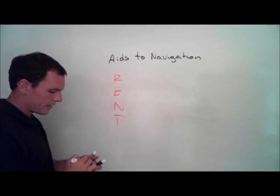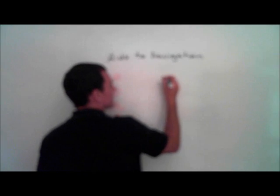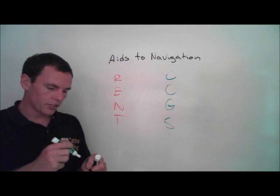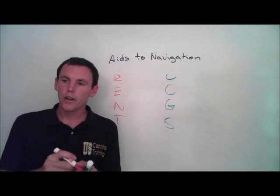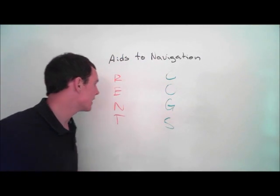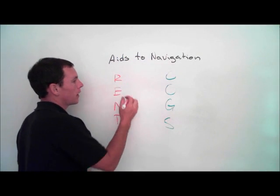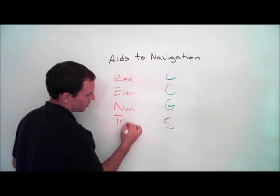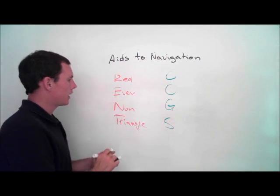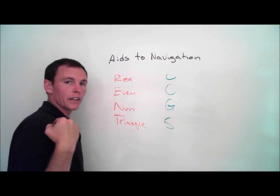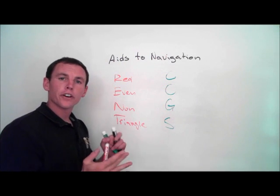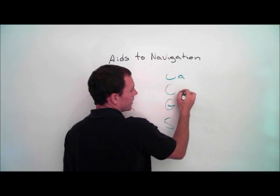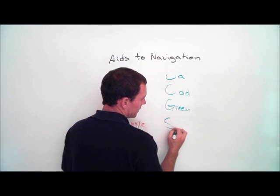RENT COGS — sounds strange, it is kind of strange, but it is an excellent representation of these aids. RENT stands for the Starboard Marks: Red, Even, Nun, Triangle. This describes the Starboard Hand Marks as you return from sea. Everybody's heard Red Right Returning — the three R's. COGS: Can, Odd, Green, Square.